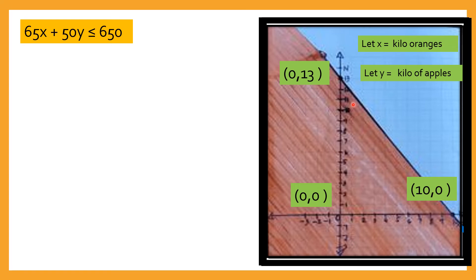Kasi nandun sila sa line at the same time nasa positive area sila. Ibig sabihin, bumili ka at ang pera mo ay ginamit mo lahat para bumili ng kilos of apples — so 13. Minaksimize mo yung pera mo, inubos mo lahat sa apples lang, hindi ka bumili ng oranges, kaya zero siya.